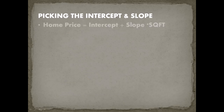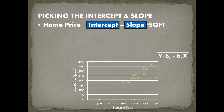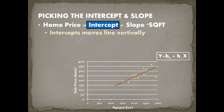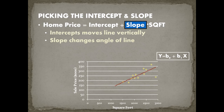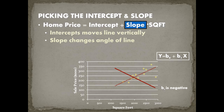So how do we pick the intercept and slope? The intercept β₀ moves the line vertically — if it increases the line shifts up; if it decreases the line shifts down. The slope β₁ changes the angle of the line: if it increases the line becomes steeper; if it decreases it becomes flatter. If β₁ is zero the line is flat, meaning there's no relationship between independent and dependent variable. If β₁ is negative the line slopes down. The computer selects the slope and intercept to minimize the model's mean squared error for the data it's fitted on.